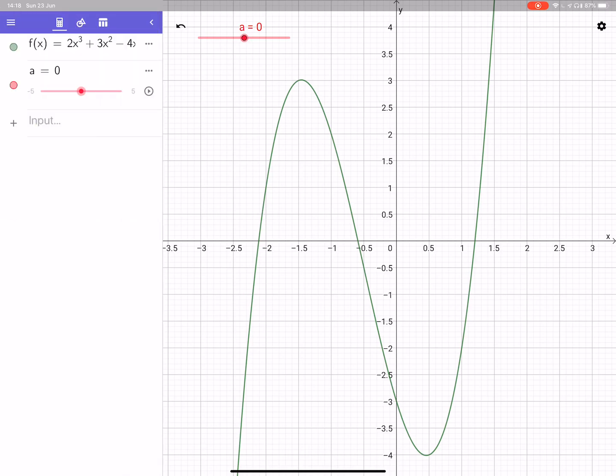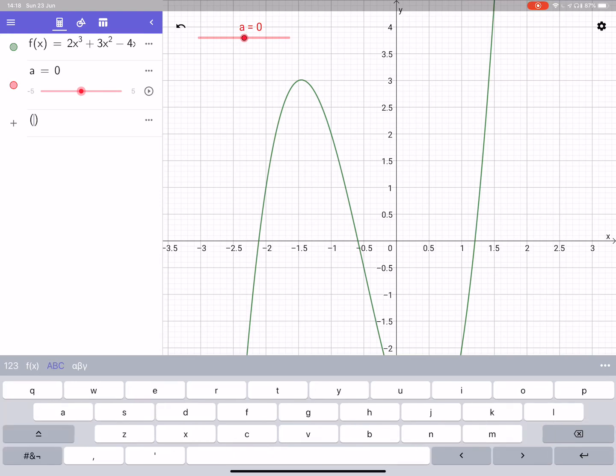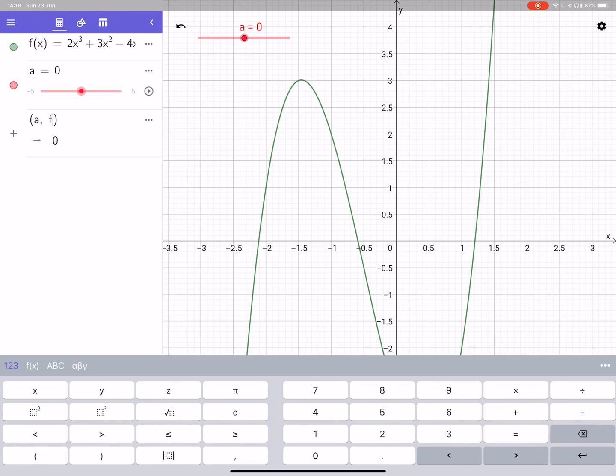Right, now I want to put a moving point onto the curve. So the curve is defined as f of x. So if I press input and now press bracket, now to get the letter a because it needs to correspond with the slider you need to press the ABC, press a comma f.